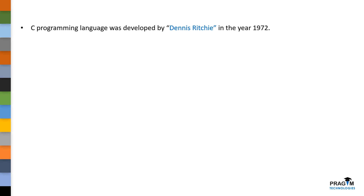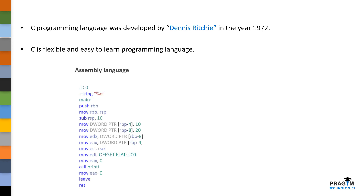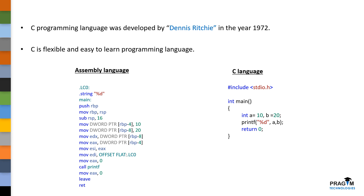C language was developed by Dennis Ritchie in the year 1972. We can say that C is a flexible and easy to learn programming language. But we should not compare this definition with modern programming languages like Python — when compared to Python, C is not a very easy to learn programming language. We should compare this definition with the ancestors of C language like assembly level language. This is the assembly language to perform addition of two numbers, and this is the C program to perform the same. So, when compared to assembly level language, C language is a bit easier to learn.